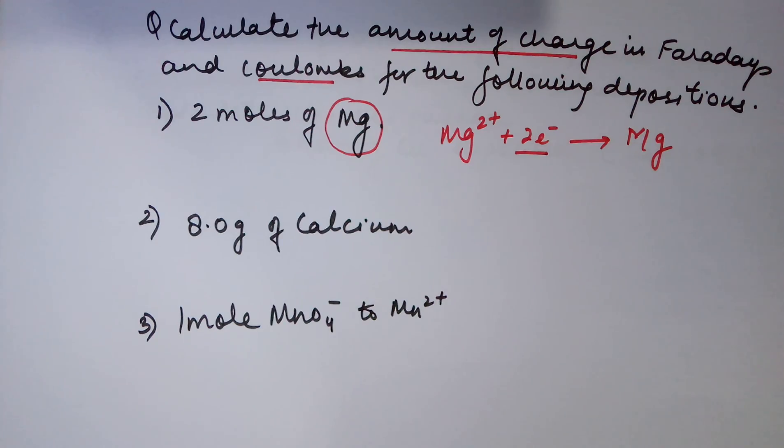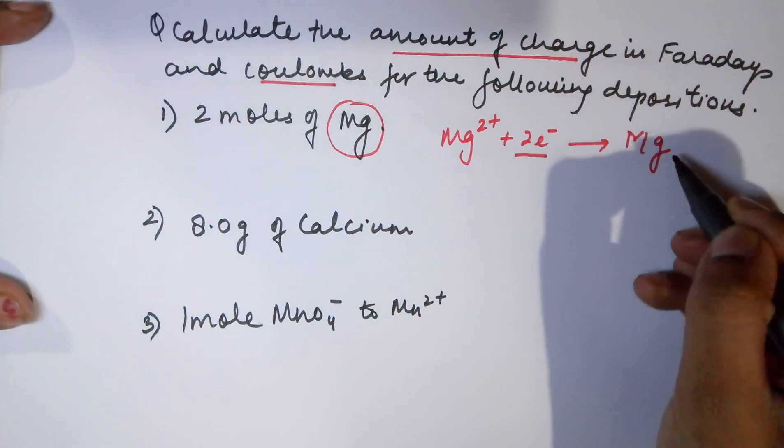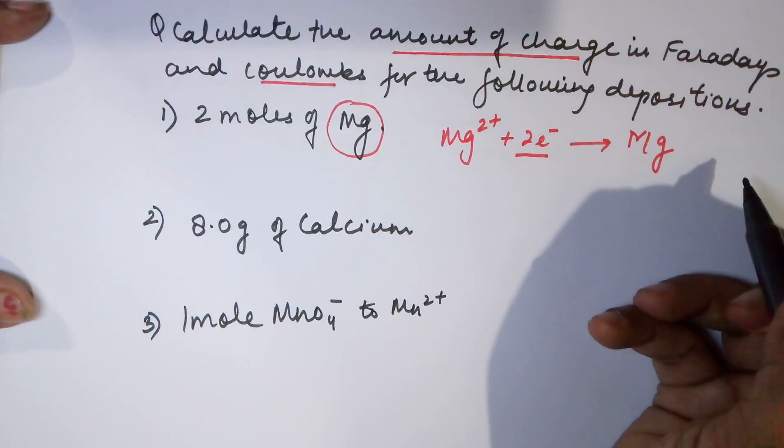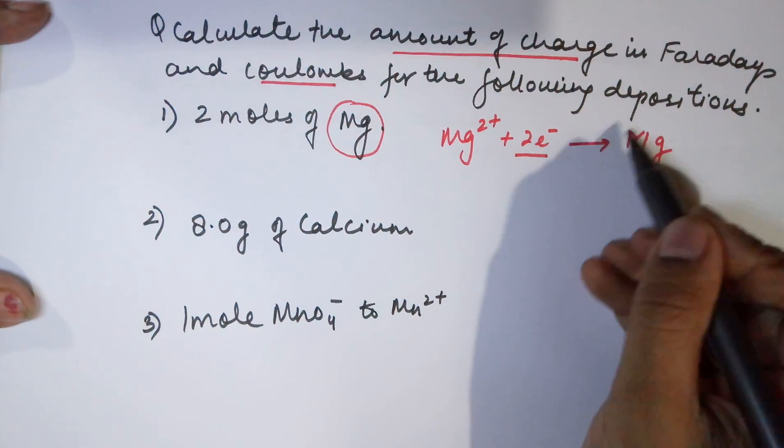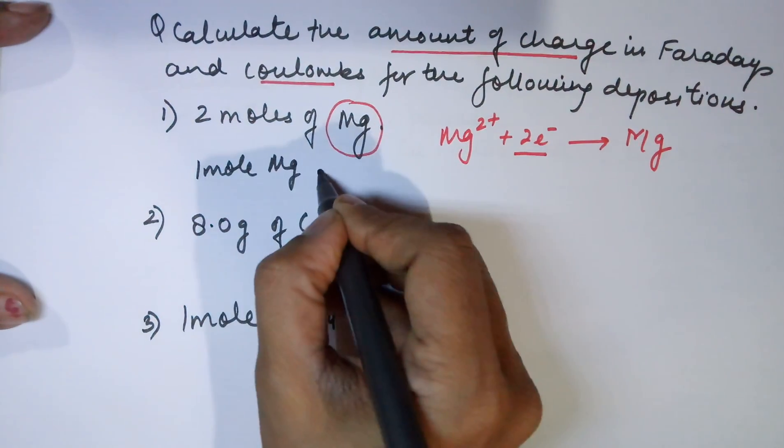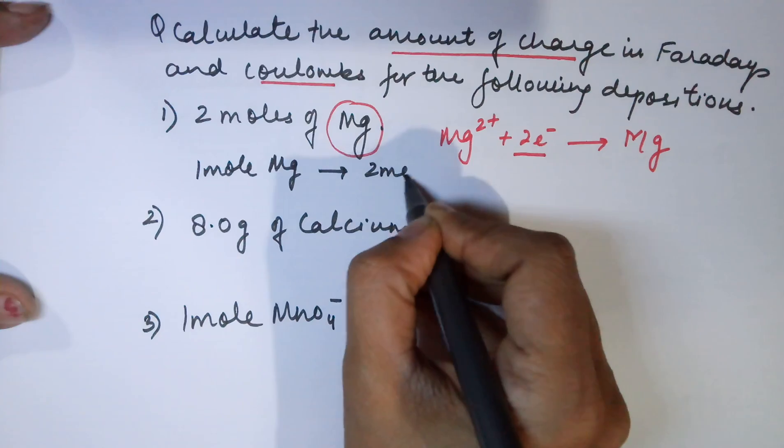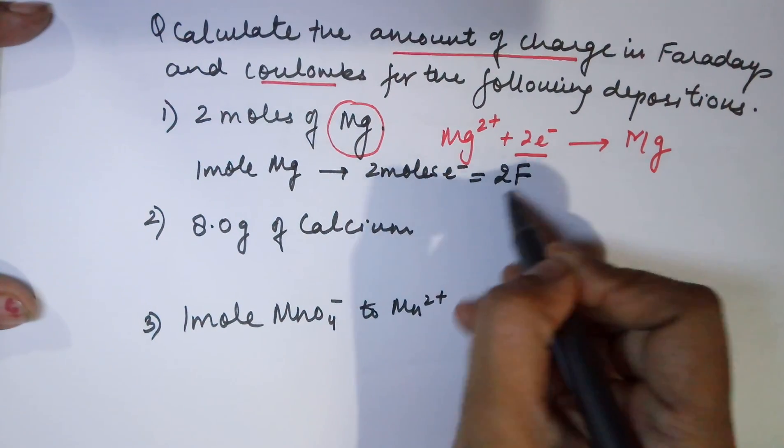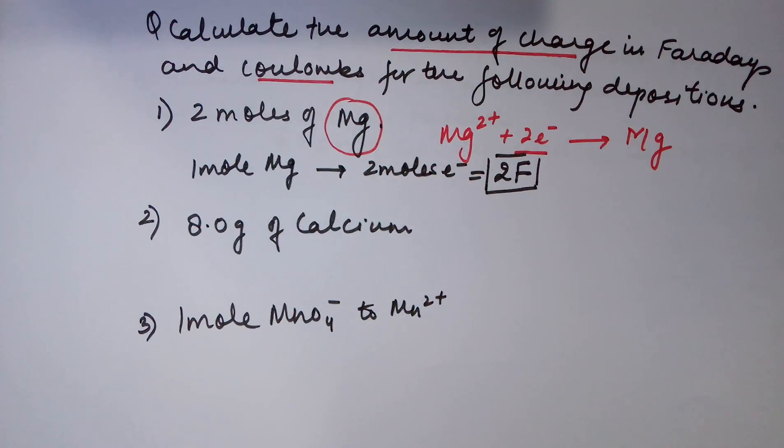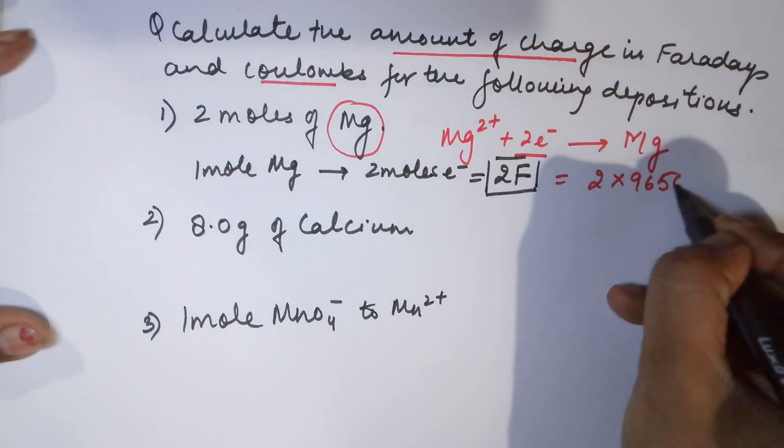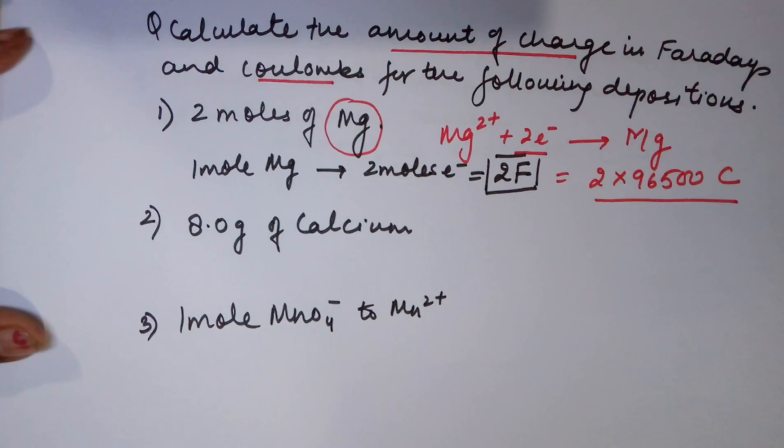If I want 1 mole of magnesium deposited, I would require 2 moles of electrons. 24 grams requires 2 moles of electrons. So if you want only 1 mole of magnesium, 1 mole would require 2 Faradays. And if you want it in coulombs, this value would be 2 × 96500 coulombs.